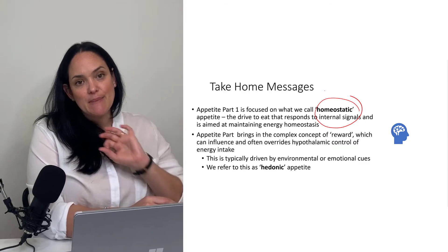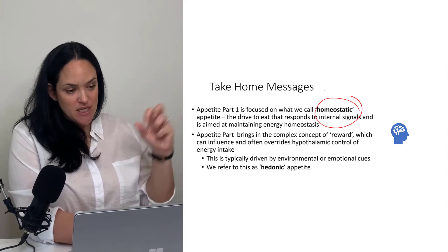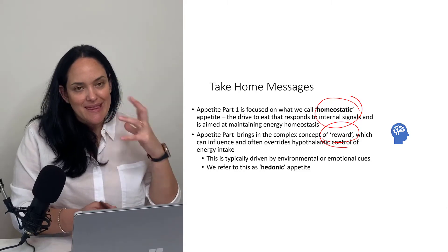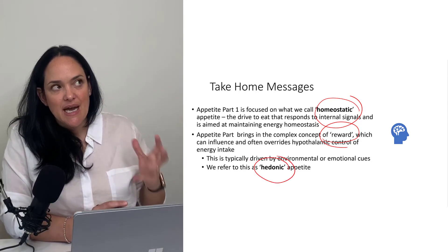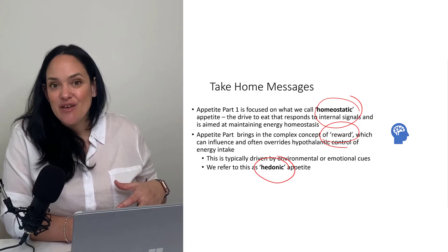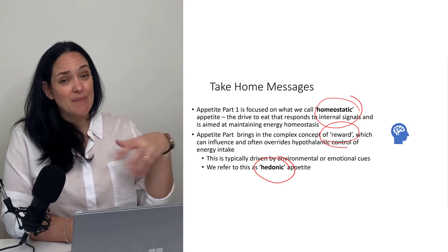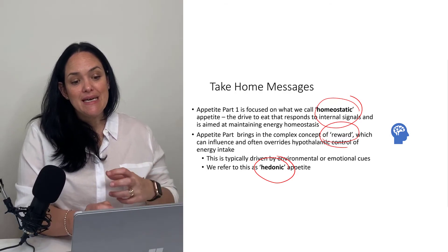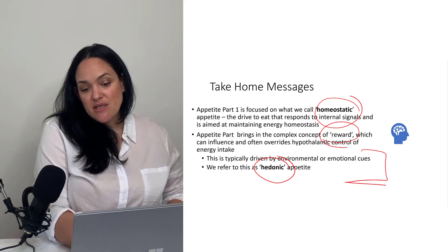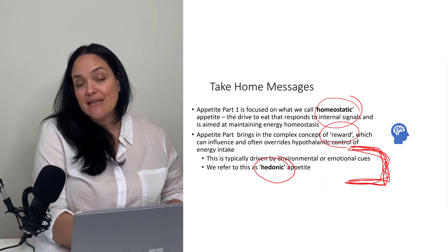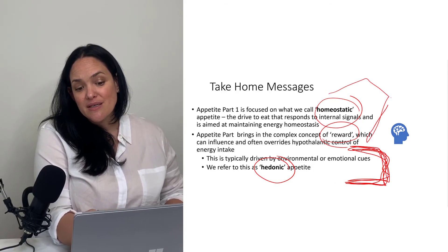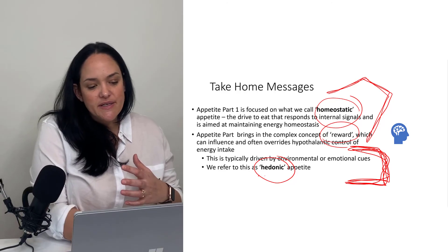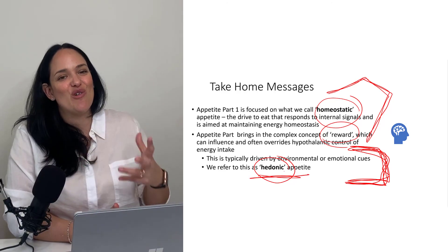That's all homeostatic appetite, but in the next part of the appetite series, we're going to start looking specifically at the concept of reward and linking that to hedonic appetite — this type of appetite that makes us want to eat even when we're not hungry, or increases our desire to eat when we are hungry and makes us eat even more. In individuals with obesity, it's often the hedonic appetite that's driving the ship, because homeostatic signals have been compromised — and even when they haven't been, this hedonic appetite can override a lot of things.